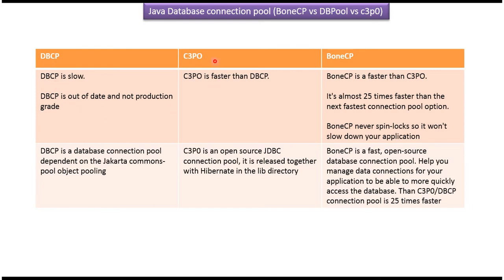The second one is C3PO. This is faster than DPCP. And the third one is BoneCP. BoneCP is faster than C3PO and DPCP — it is almost 25 times faster. This BoneCP never spin locks, so it won't slow down your application.